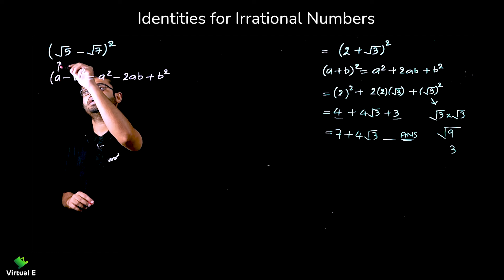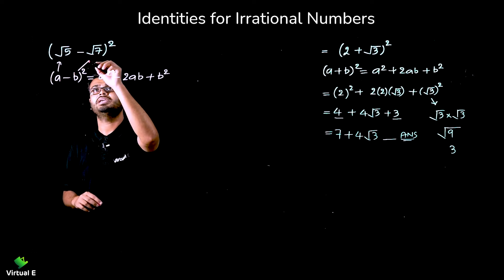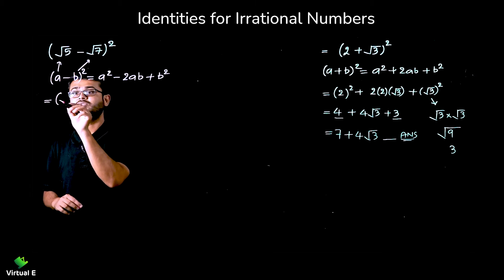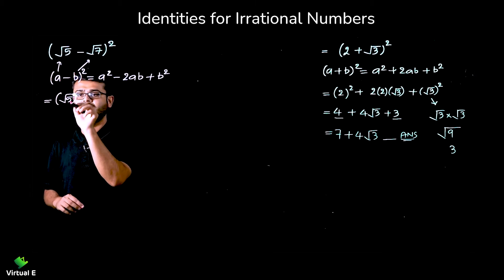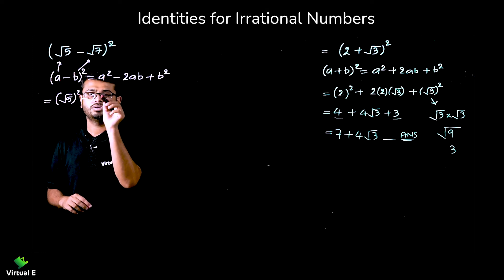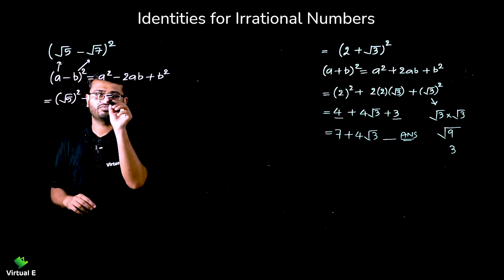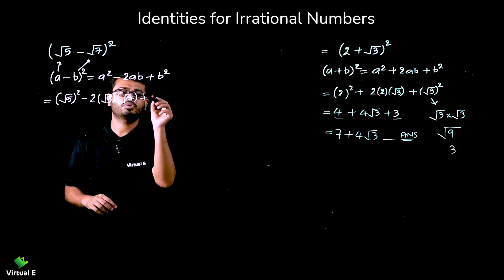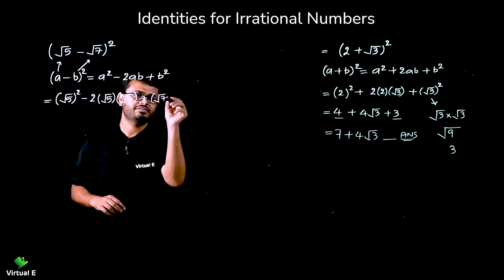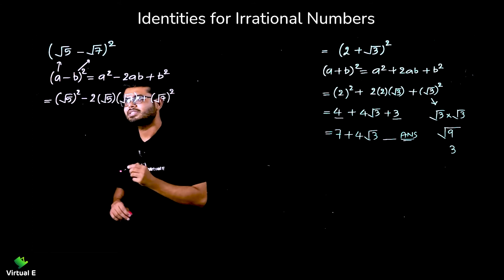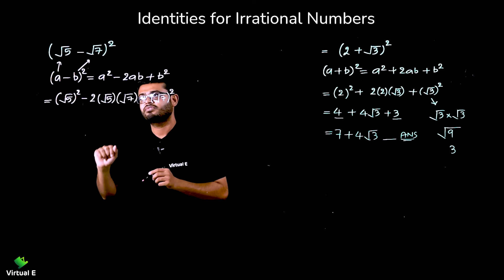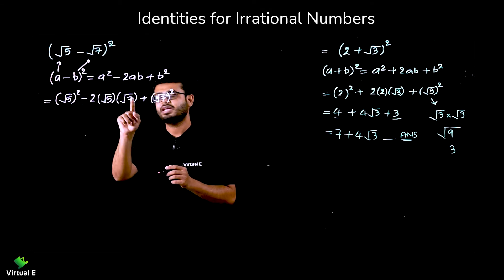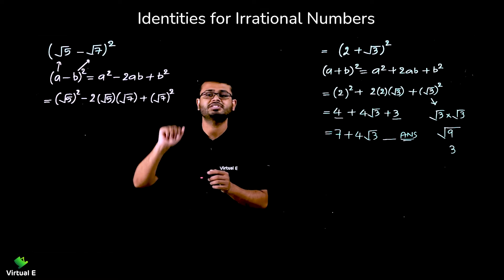The identity is (a - b)² = a² - 2ab + b². In our case a = √5 and b = √7. So applying it: (√5)² - 2·√5·√7 + (√7)². That gives us √5 squared, minus 2·√5·√7, plus √7 squared.